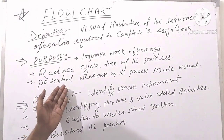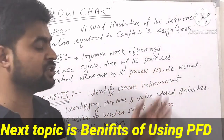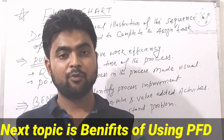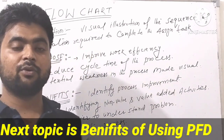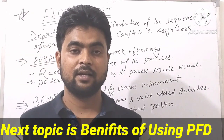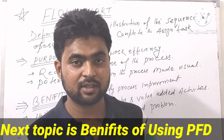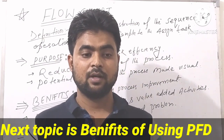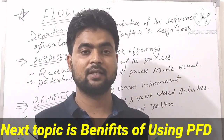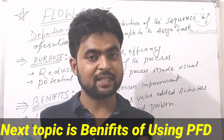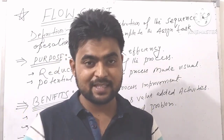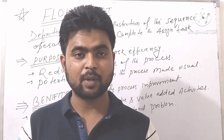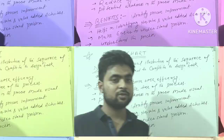Third point is potential weakness in the process made visible. If we use a flowchart, we can see where the weakness is in the process, because we have the whole process in front of us. So we can see the process and it is easy to identify the weakness. That is the purpose of using flowchart.